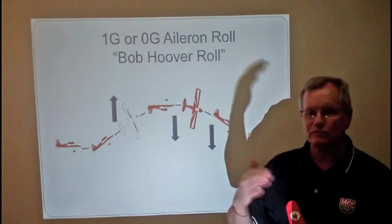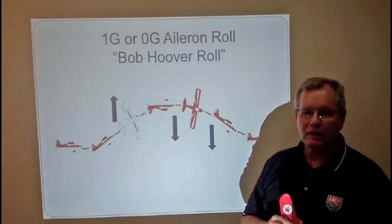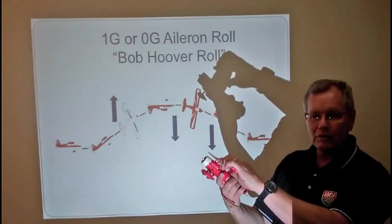I will tend to call this the Bob Hoover roll because he not only stays coordinated, he tends to fly at 1G, so he could be pouring iced tea while he's rolling around, and the iced tea stays in the glass. Those people that do the 0G version of the aileron roll still do the same thing, pitching first before the roll has begun.